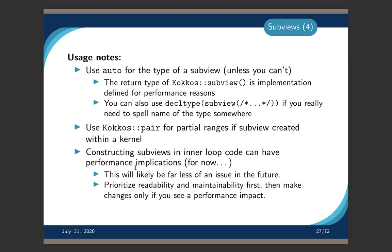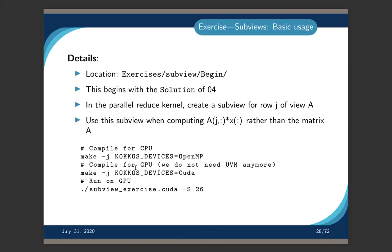Generally, prioritize readability and maintainability first — only try to avoid subviews if you actually see a performance impact. The exercise for this section uses the same problem: instead of computing the dot product by accessing a 2D matrix directly in the innermost loop, you take a subview of just the row before that loop, then compute the dot product between two vectors effectively.